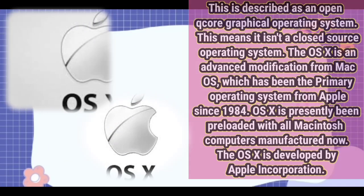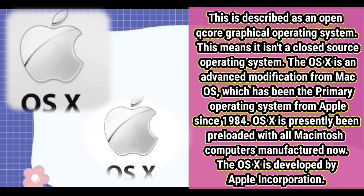The last operating system we'll be talking about today is OS X. It is described as an open-core graphical operating system, meaning it is not a closed-source operating system. OS X is an advanced modification from Mac OS, which has been the primary operating system from Apple since 1984.